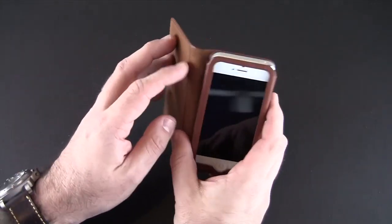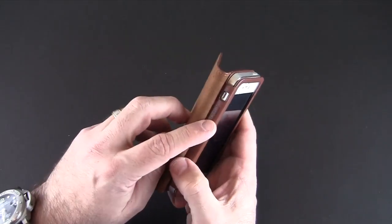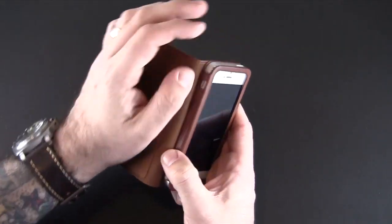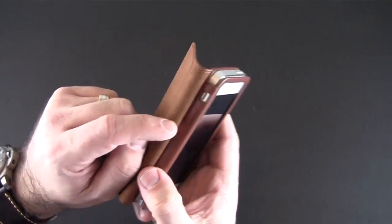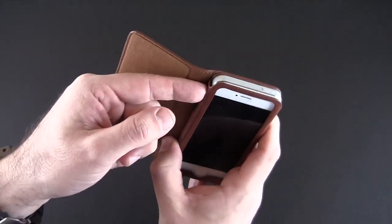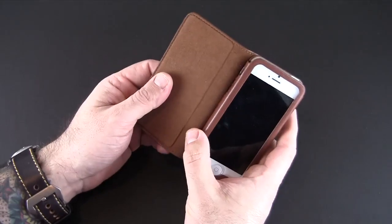As far as accessing the other buttons, you do have to flip the case open to get to the volume up and down. It is embossed with a plus and minus and then there's a nice cutout for the vibrate switch that you can get to no problem.